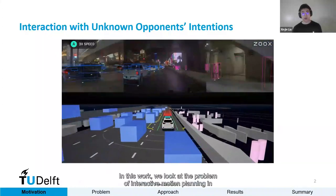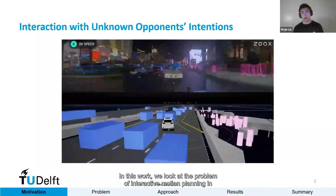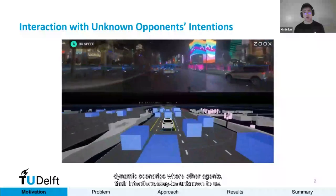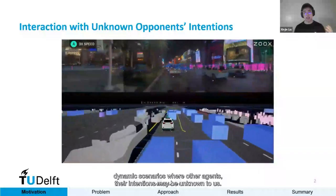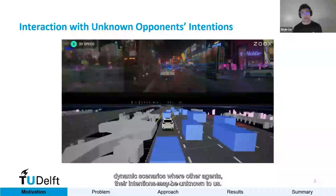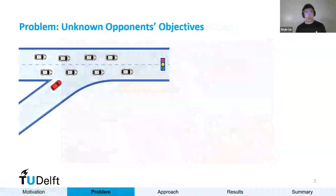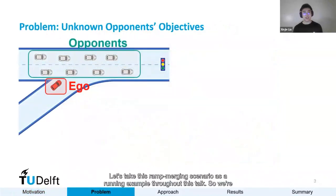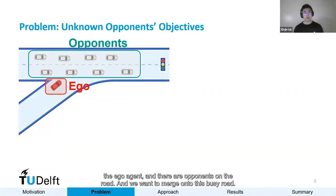In this work, we look at the problem of interactive motion planning in dynamic scenarios where other agents' intentions may be unknown to us. Let's take this ramp merging scenario as an example throughout this talk. We're the ego agent, and there are opponents on the road, and we want to merge onto this basic road.